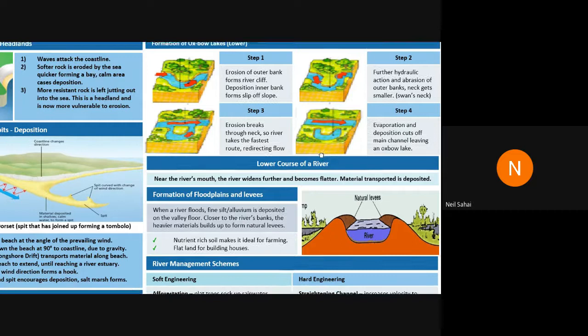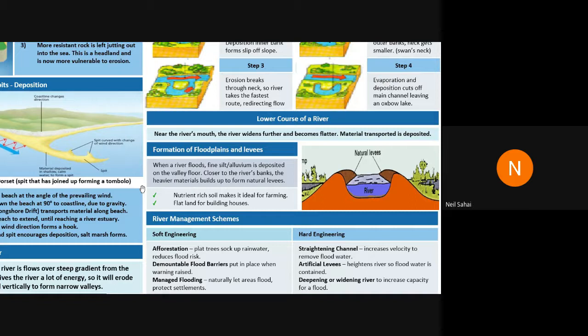As meanders snake across the floodplain they remove and resort material, creating a flat floodplain. The lowest part of the river valley is flat land — easiest to build on — and importantly features very rich alluvial soils. These soils are created by flooding, where fine particles deposited when the river floods provide excellent conditions for farming. Floodplains develop over hundreds of thousands of years as the river snakes across.